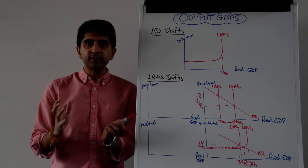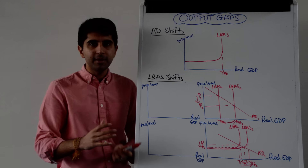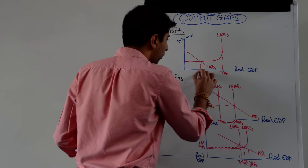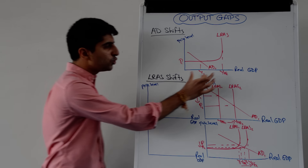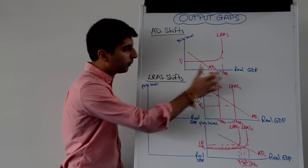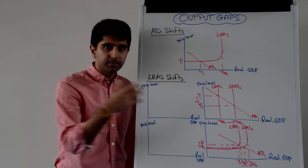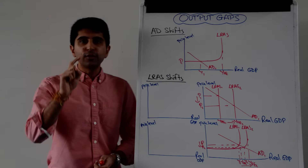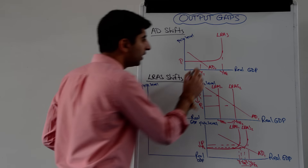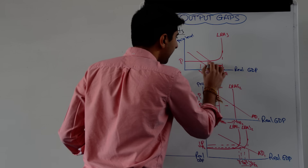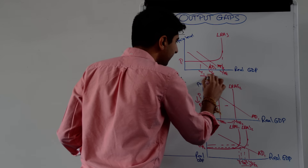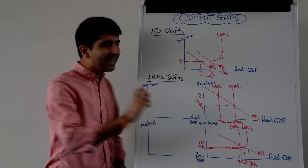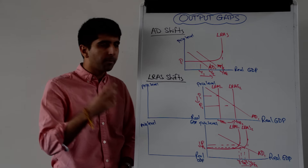What if there is a huge negative output gap? Maybe the economy is in deep recession where AD is way down at Y1 with price level P1 — a huge negative output gap, the difference between Y1 and YFE. Well if there is an increase in real disposable income and AD shifts to the right to AD2, you can see that yes we see the increase in actual growth, yes we see the fall in unemployment, but we don't see any impact on inflation whatsoever. The price level remains at P1.